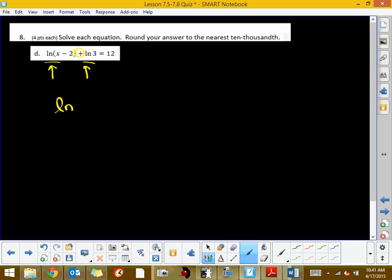So it's going to be the natural log of, and I want to take this 3 times x minus 2. So it's going to be 3 times x minus 2 equals 12. That's going to be the natural log of, and I'm just going to simplify. This is 3x minus 6 by distributing.